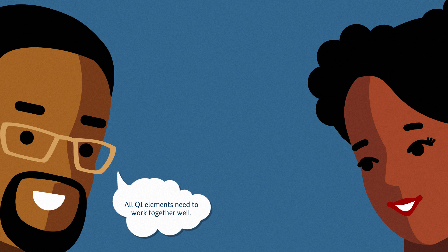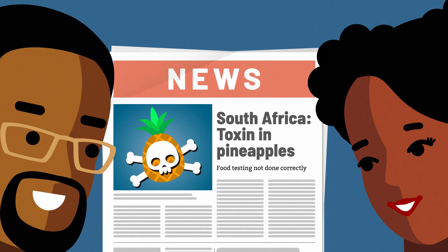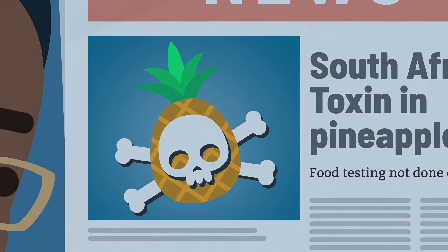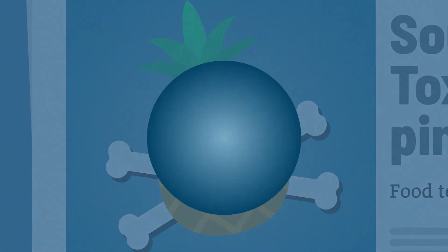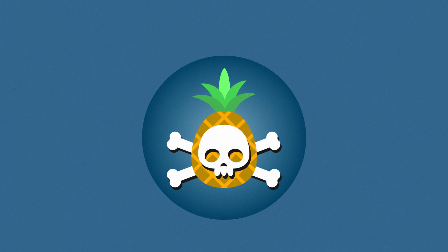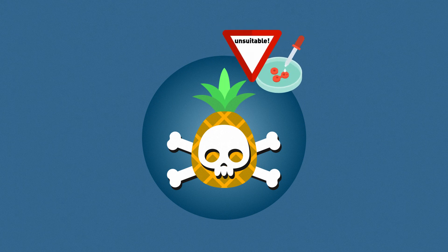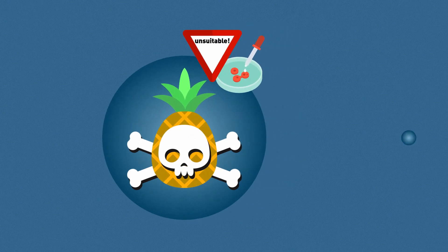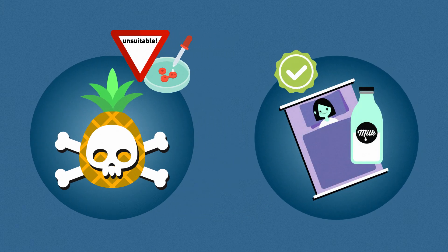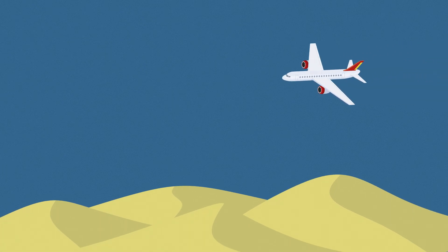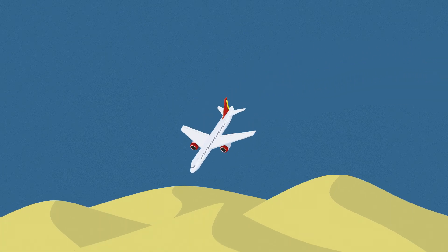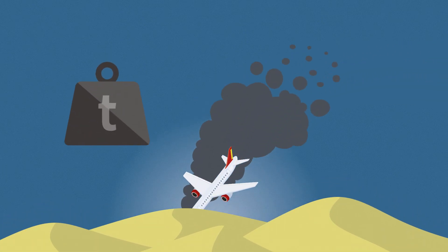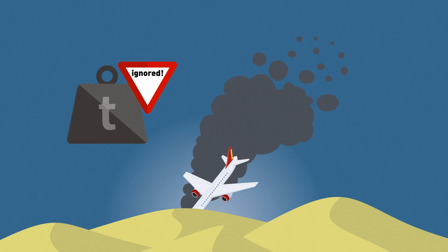If one of them fails, the outcome can be disastrous. Like in the pineapple case — many people suffered severe poisoning because the testing laboratory didn't identify the dangerous substances. Or what happened in China: they seem to have issued certificates without being strict enough. This plane crash in Colombia was due to standards being ignored — it carried way too much weight.